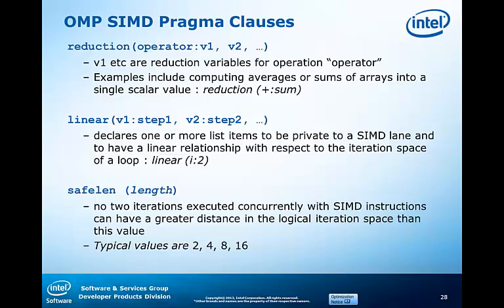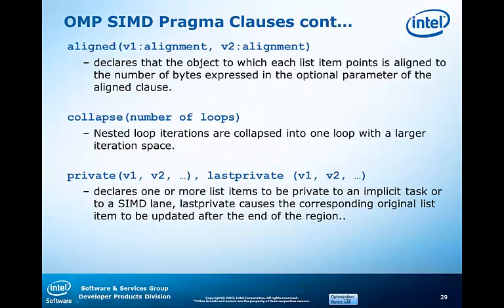The OpenMP 4.0 standard defines the pound-pragma OMP SIMD safelen. For more information, refer to the OpenMP 4.0 specification. The aligned clause specifies that the address of objects are aligned to the number of bytes specified by the optional parameter list. The collapse clause allows the iteration of all associated loops to be collapsed into one larger iteration space that is then executed with SIMD instructions, and may be used to specify how many loops are associated with the construct. The clauses private, first private, and last private all allow the user to specify variables to be treated as private within each vector lane.